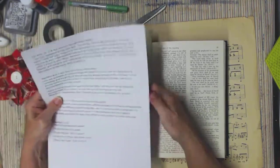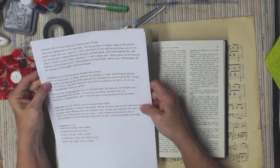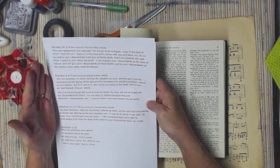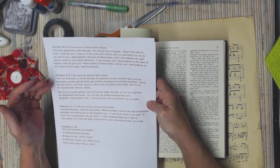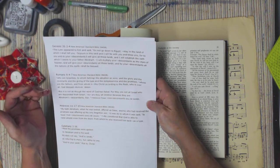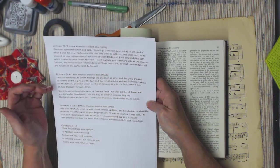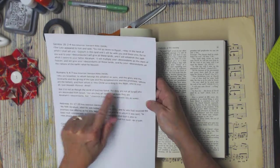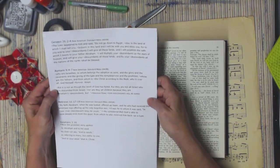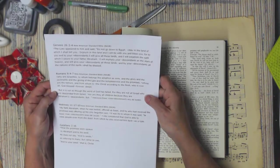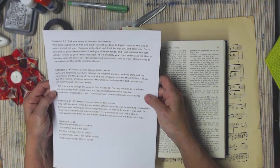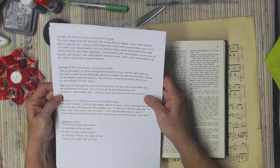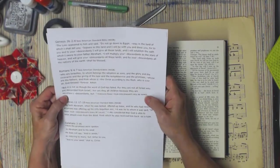And in Romans, the fulfillment of that prophecy says, To those who are Israelites, to whom belongs the adoption as sons, and the glory and the covenants, and the giving of the law, and the temple service and the provinces, whose are the fathers, and from whom is the Christ, according to the flesh, who is over all. God be blessed forever. Amen. But it is not as though the word of God has failed, for they are not all Israel who are descended from Israel, nor are they all children, because they are Abraham's descendants. But through Isaac, your descendants will be named. So he's very specific. It was through Isaac that Jesus came.